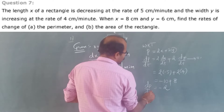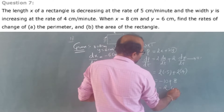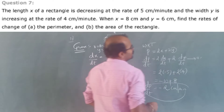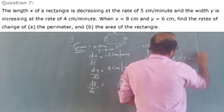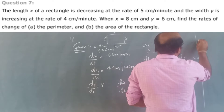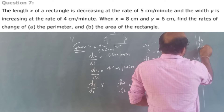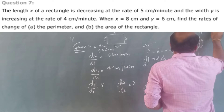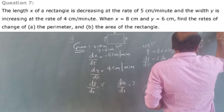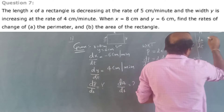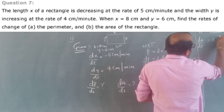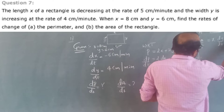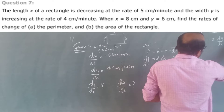The perimeter is changing at minus 2 cm per minute. Now for the area: A = x × y. Differentiating using product rule: dA/dt = x(dy/dt) + y(dx/dt).